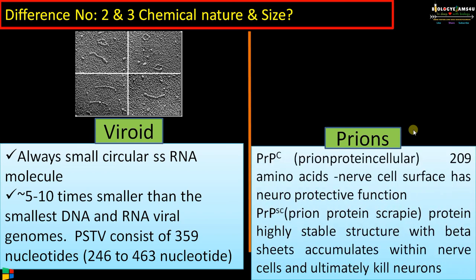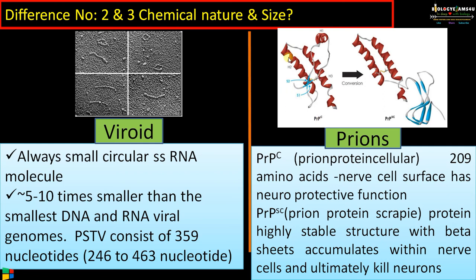In the case of prions, they are misfolded proteins. The normal form is called PrPC — indicating cellular or normal protein — which is made up of 209 amino acids and has a neuroprotective function. This PrPC is converted to PrPSC, which is called prion protein Scrapie, the disease that occurs in sheep. The PrPSC protein is highly stable, as you can see from its structure.